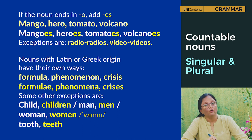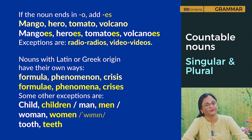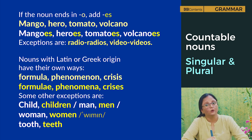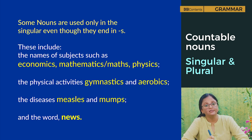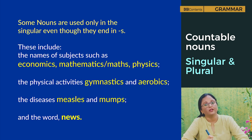Nouns with Latin or Greek origin have their own ways: formula/formulae, phenomenon/phenomena, crisis/crises. Some other exceptions: child/children, man/men, woman/women, tooth/teeth. Some nouns are used only in the singular even though they end in s. These include names of academic subjects such as classics, economics, mathematics, maths, physics; physical activities such as gymnastics and aerobics; and diseases such as measles and mumps.